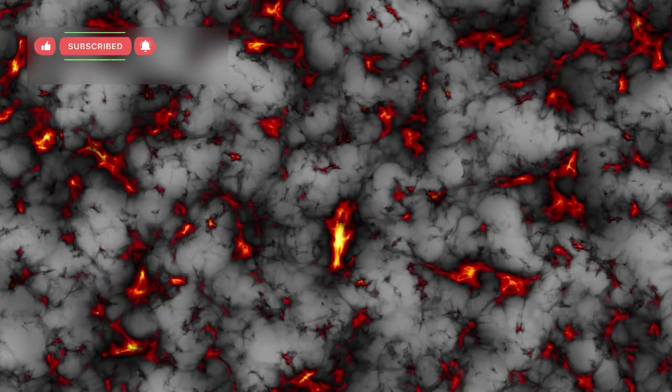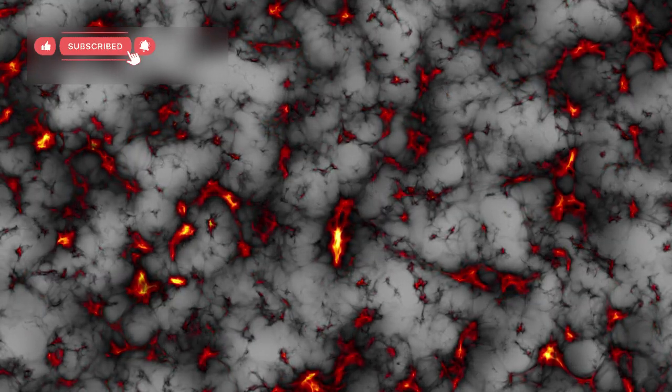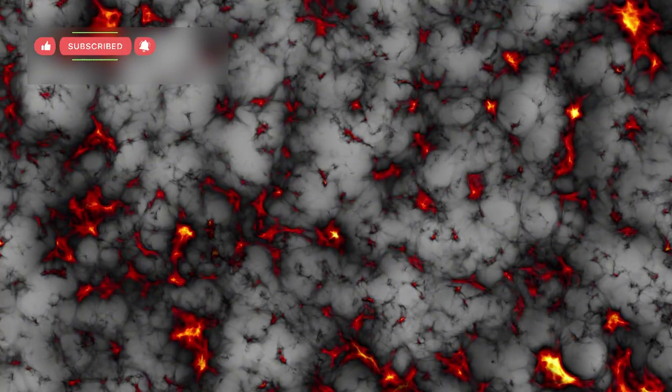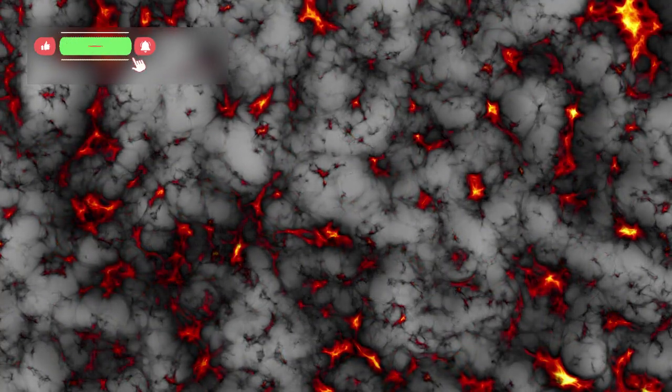It also raises the possibility that dark matter, the invisible substance that makes up most of the universe's mass, may have been distributed differently in the early cosmos, creating stronger gravitational fields that accelerated galaxy formation.